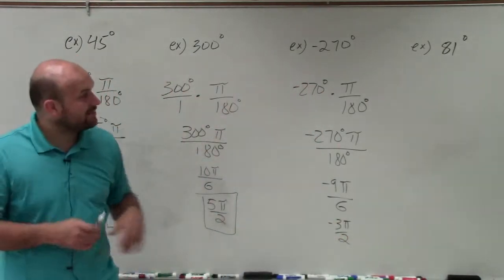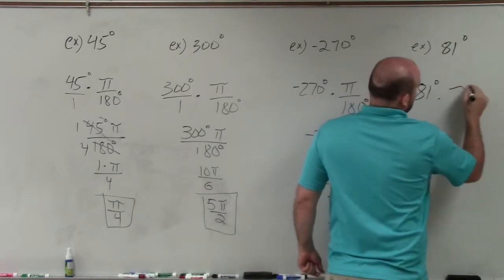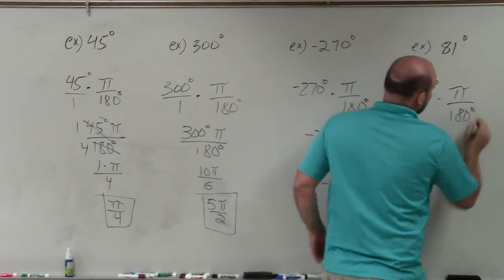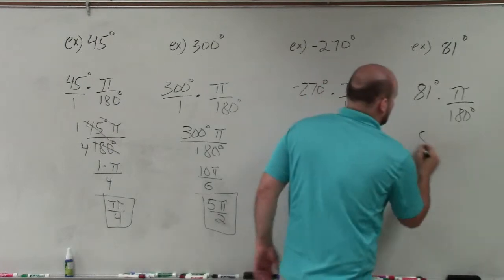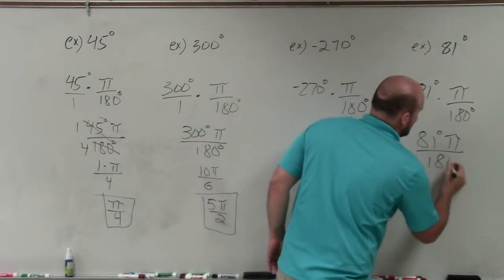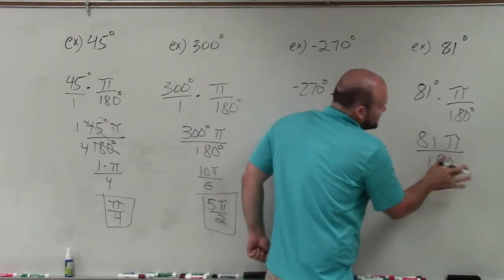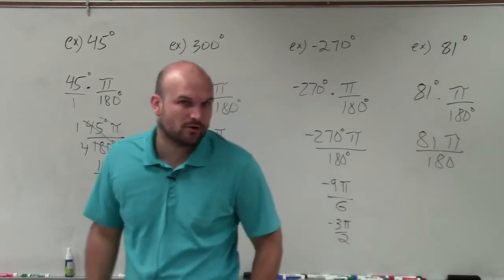Now, my last example here, I have 81 degrees. Well, if we do the same thing, we do 81 degrees times pi over 180 degrees. And you can see that, all right, well, what number can I divide into 180 as well as 81 degrees? And the unfortunate answer is we can't. So therefore, if we're going to leave this in fractional form, it would just be 81 pi over 180.